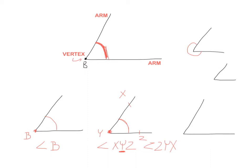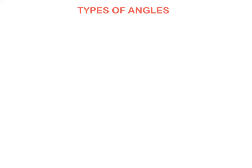The last naming method — you won't see it often but you need to know it — is using Greek letters. It might be alpha, beta, gamma, or delta. There are lots of Greek letters and you can see them in my classroom. So we can write down 'angle alpha'.